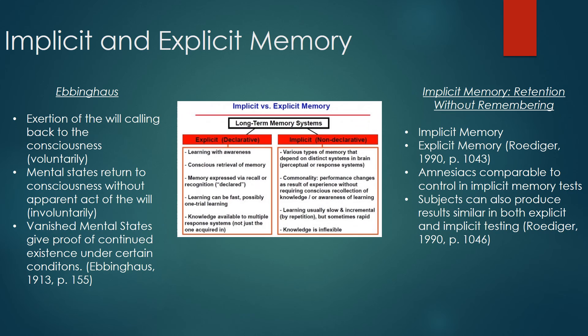Ebbinghaus mentioned voluntary and involuntary recollection. In 'Implicit Memory: Retention Without Remembering,' implicit memory is defined closely to involuntary recollection, which is defined as memory that reflects consciously on the past. The article discusses a study on amnesiacs, measuring them with explicit tests — which is free recall from presented words — while another group was given a list of words and had to determine which ones were presented to them. Some were measured with implicit tests, which was to identify a word from fragments or to say what comes to mind. They were also given a list of words previously. It was found that in these implicit tests, amnesiacs and control subjects were similar in results.